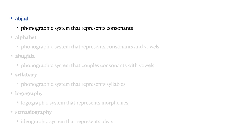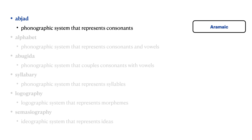Let's next look at abjads. Abjads are phonographic writing systems where each symbol represents a consonant. Phoenician is a prime example of an abjad. Aramaic is another abjad that developed from Phoenician. Arabic and Hebrew are modern abjads that developed from Aramaic.